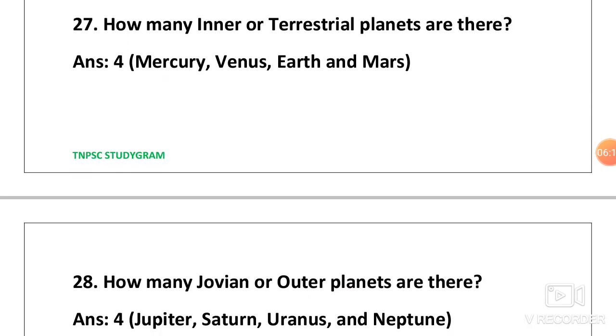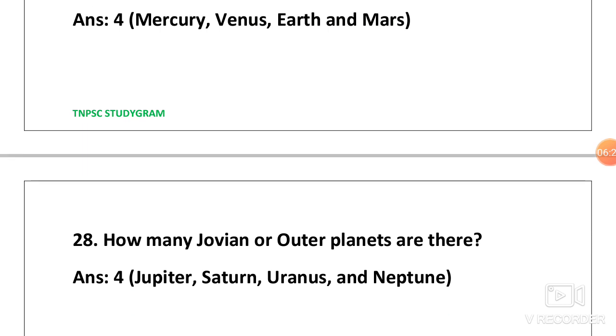Next one, how many inner or terrestrial planets are there? We have 8 planets, divide them into 2. First 4 and next 4. First 4 are inner or terrestrial planets. They are Mercury, Venus, Earth and Mars.